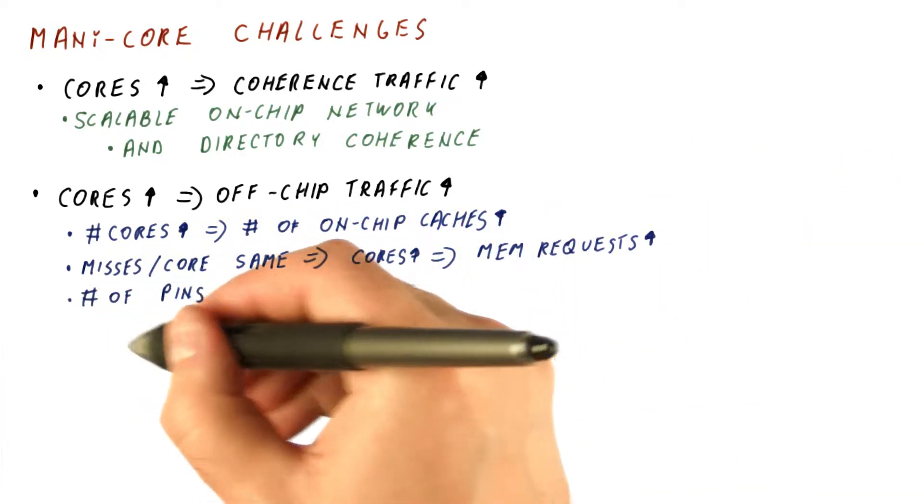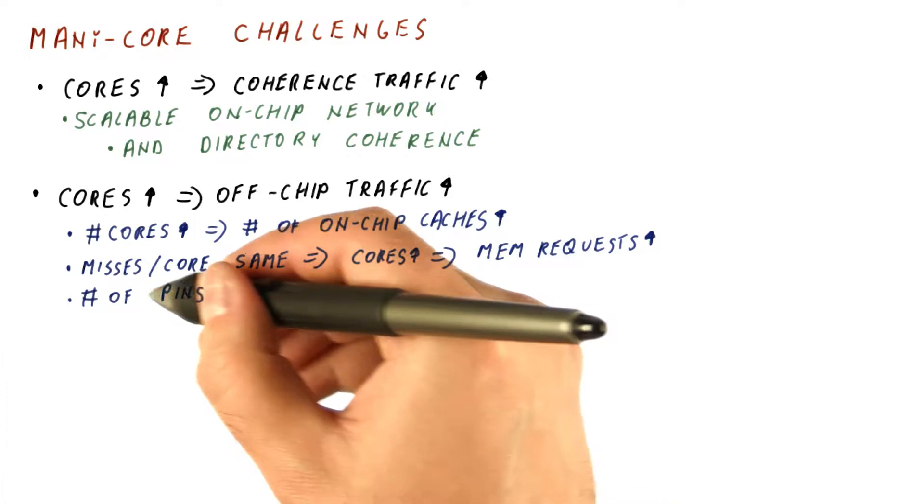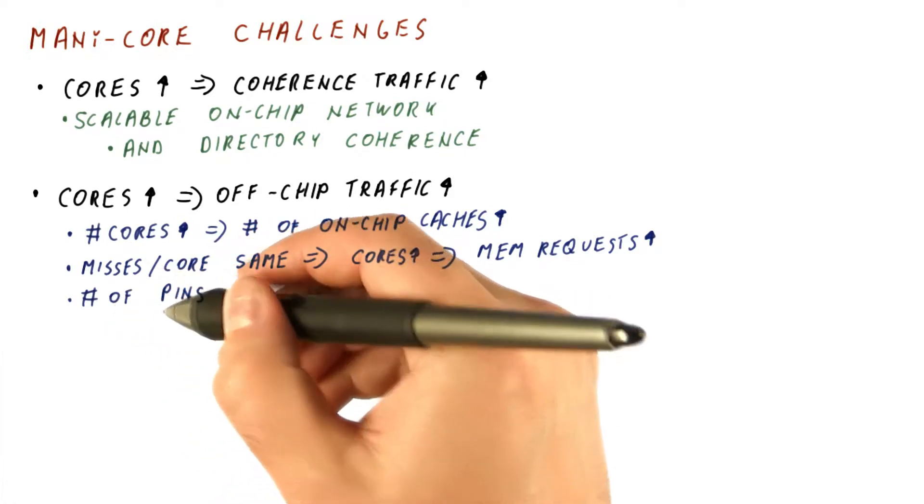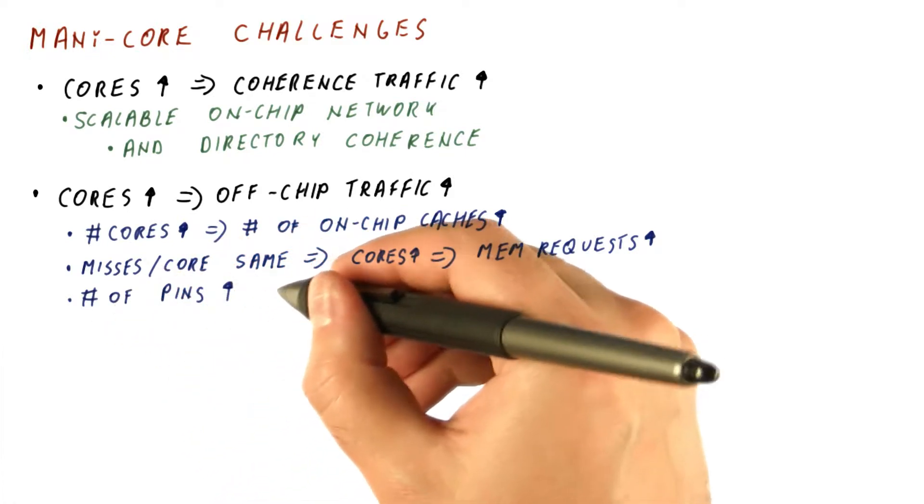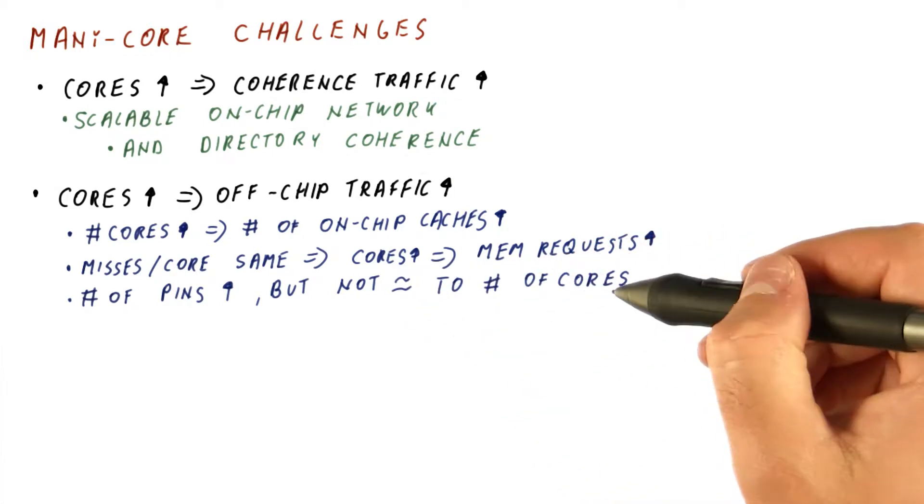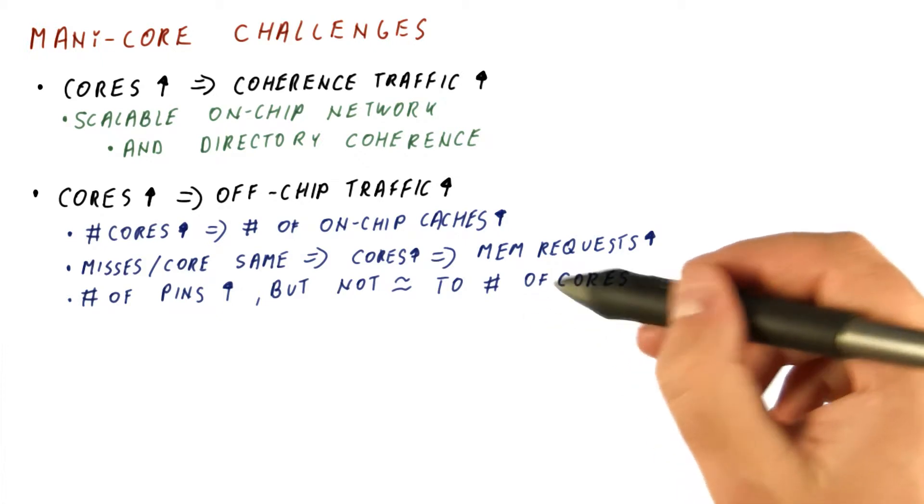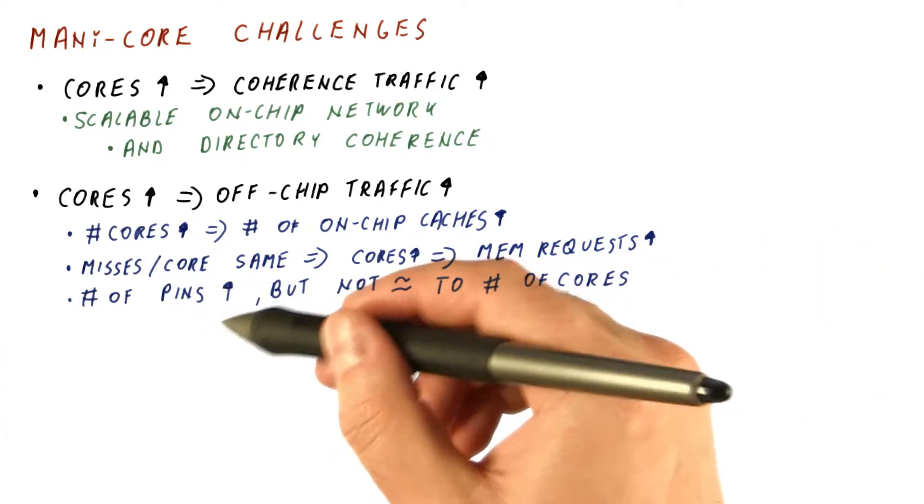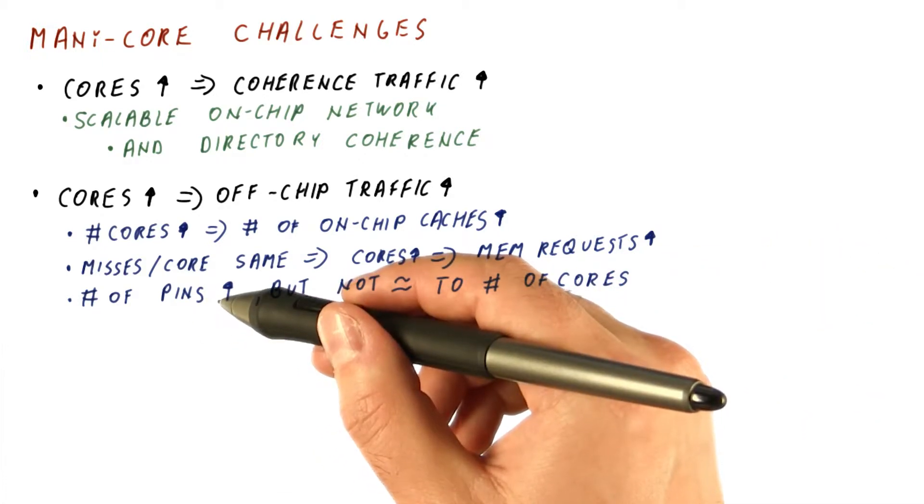Now know that the number of pins, the number of those little wires sticking out of a chip, does go up slowly, but not in proportion or anywhere close to in proportion to the number of cores. So if we double the number of cores, possibly we get maybe 10% more pins, but that's it.